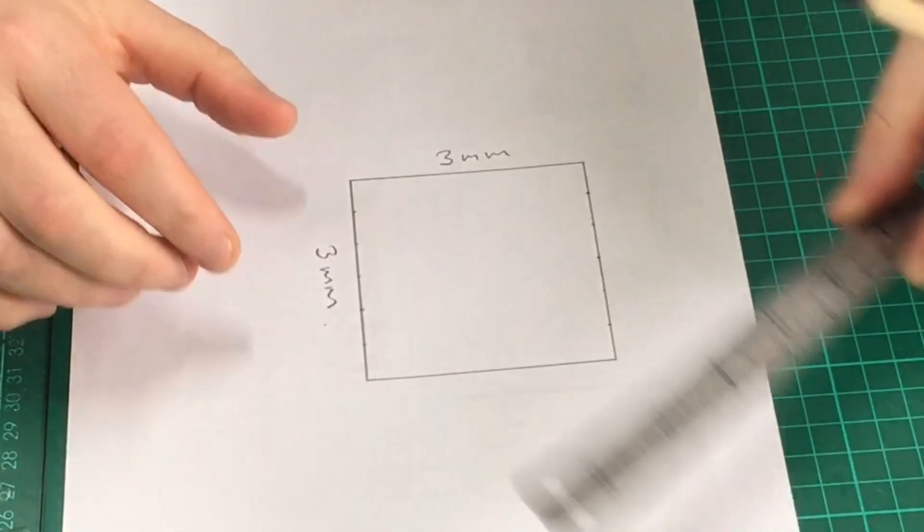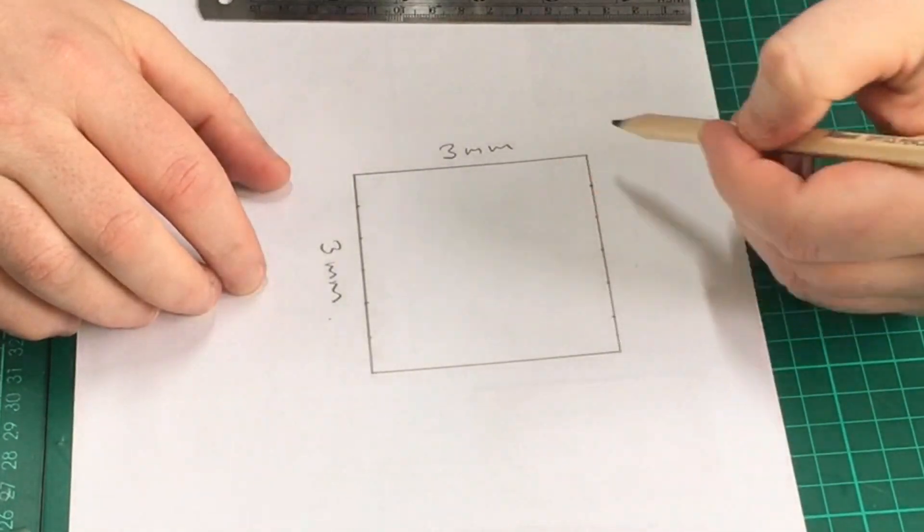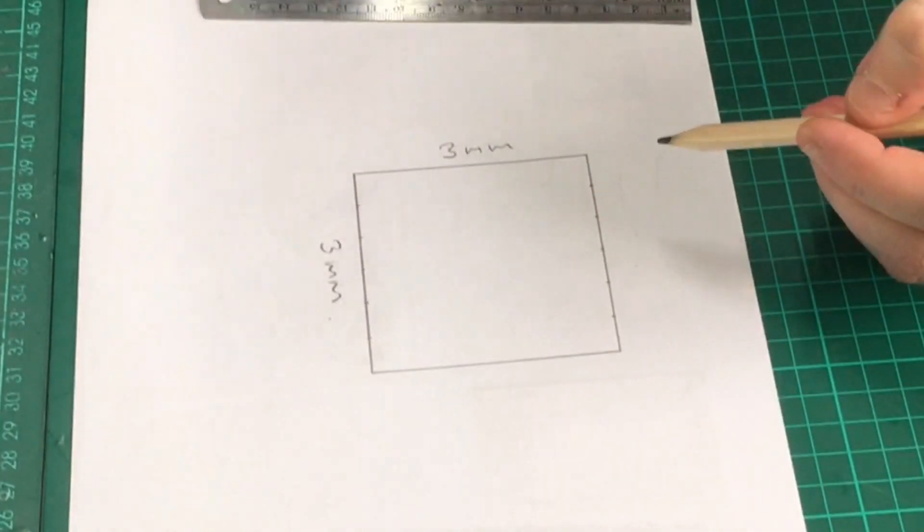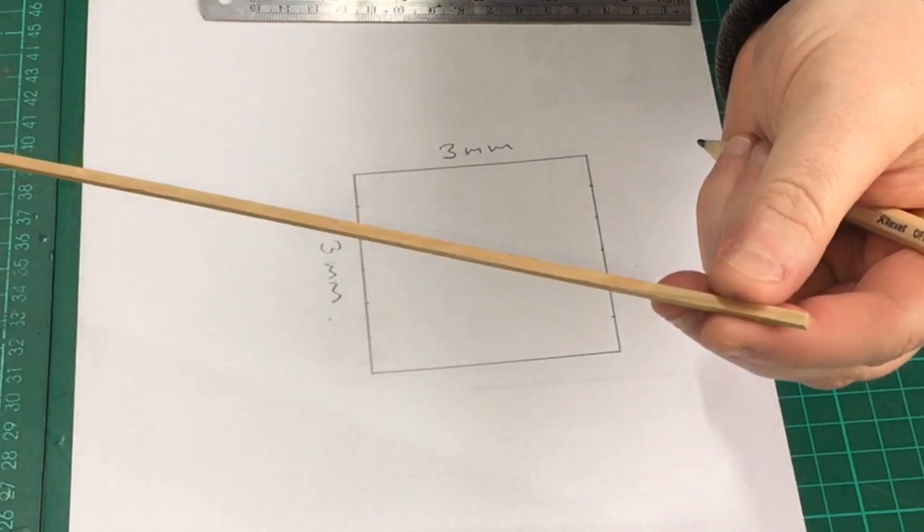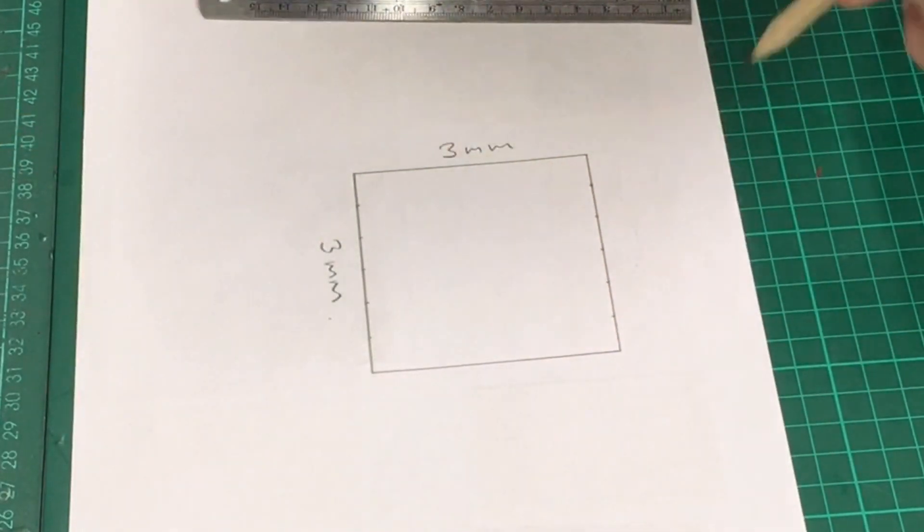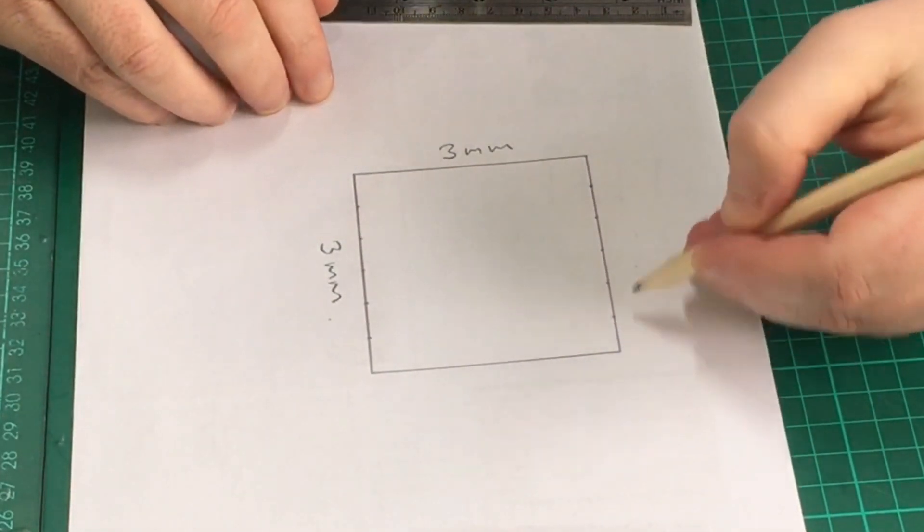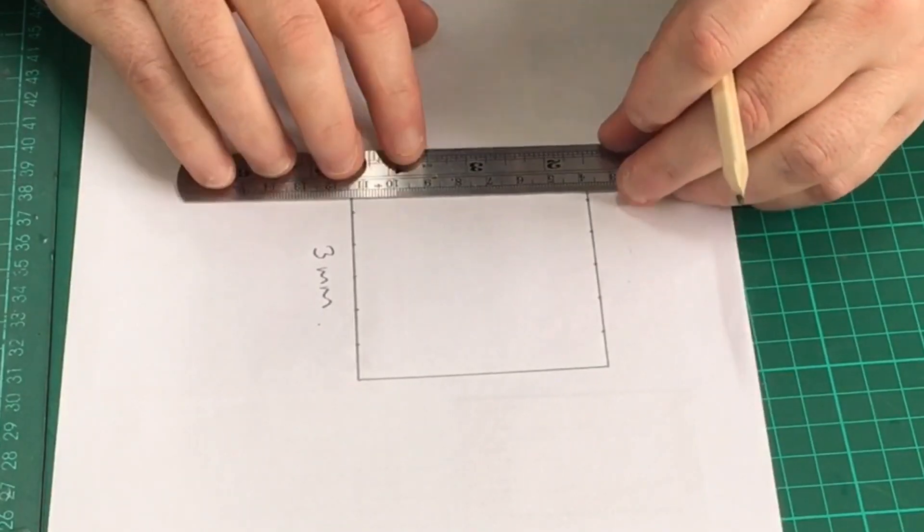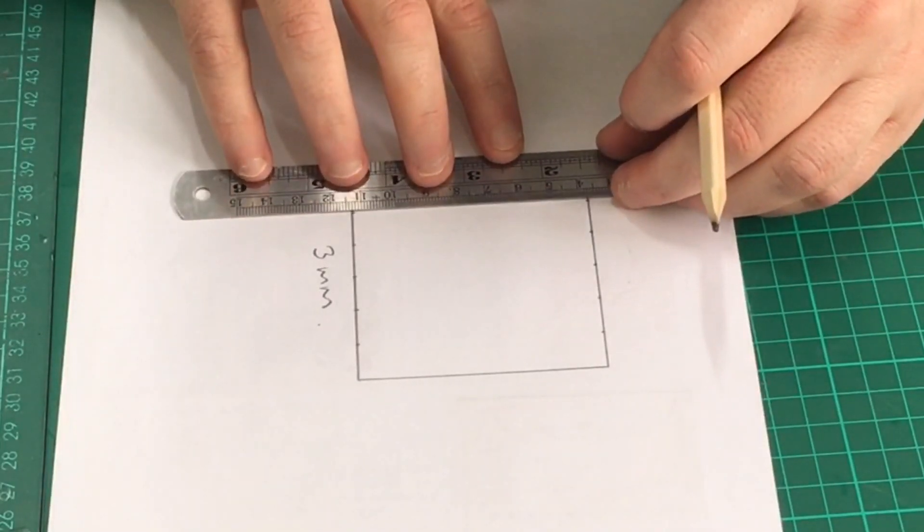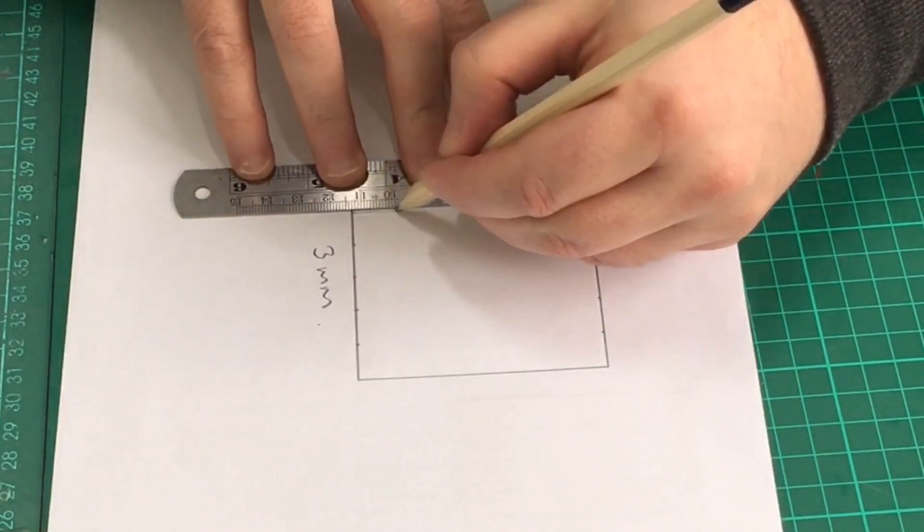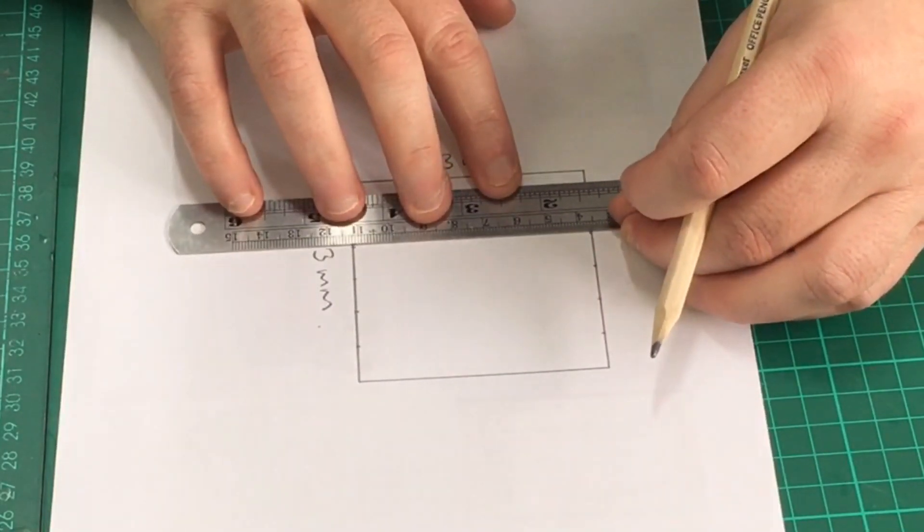So I've just drawn this little square. This is just going to represent the three by three timber that we've been working with today just to make these mouldings out of. And I've divided it up into six and each one of these lines represents 0.5 of a mill.